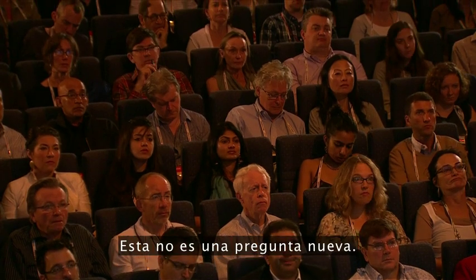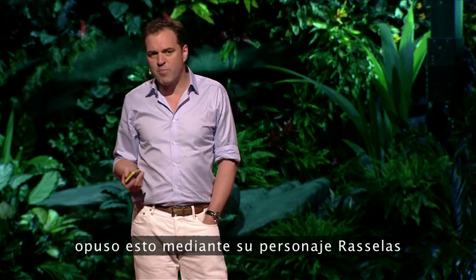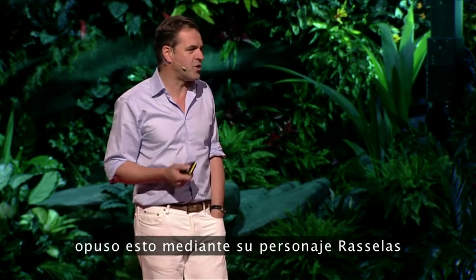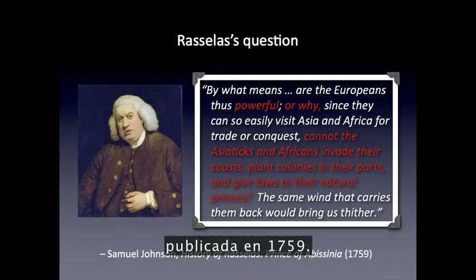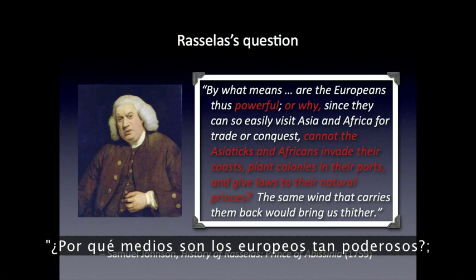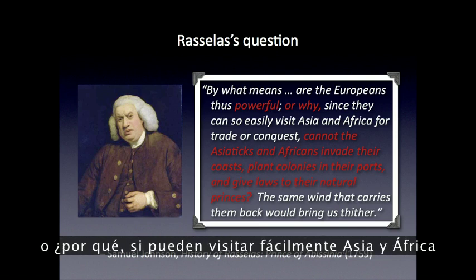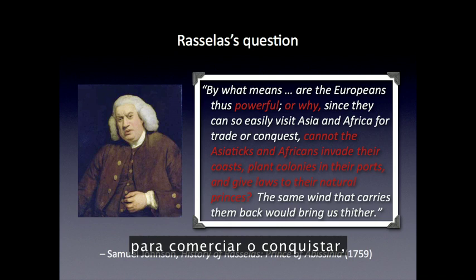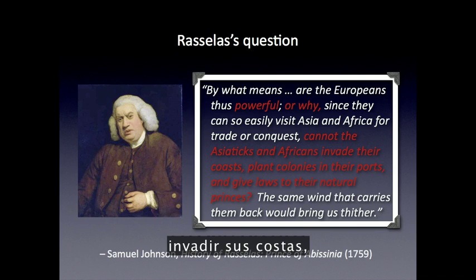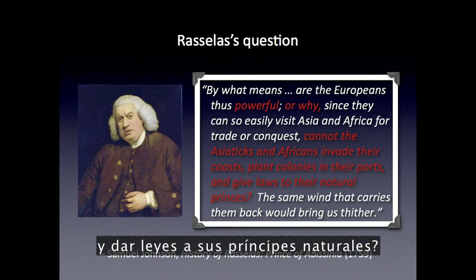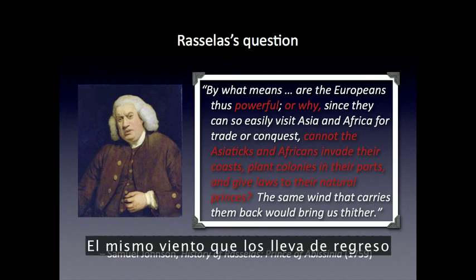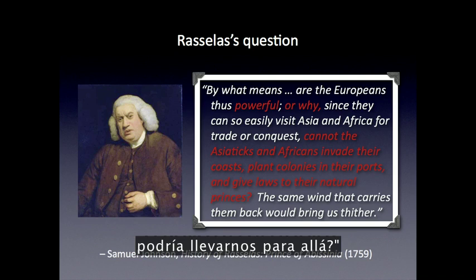This is not a new question. Samuel Johnson, the great lexicographer, posed it through his character Rasselas in his novel, Rasselas, A Prince of Abyssinia, published in 1759: "By what means are the Europeans thus powerful? Or why, since they can so easily visit Asia and Africa for trade or conquest, cannot the Asiatics and Africans invade their coasts, plant colonies in their ports, and give laws to their natural princes? The same wind that carries them back would bring us thither."